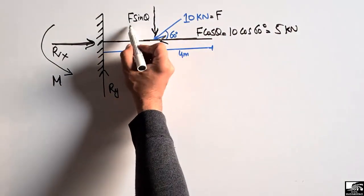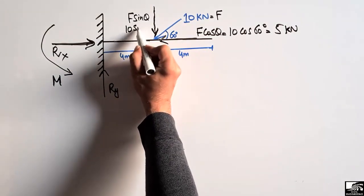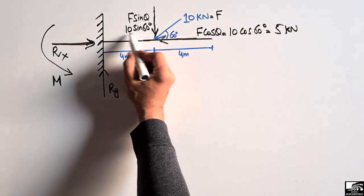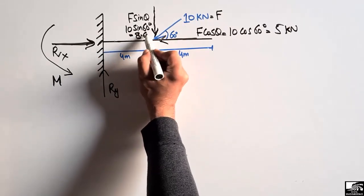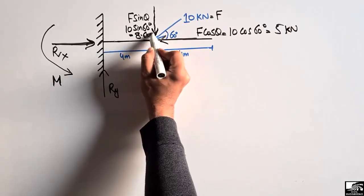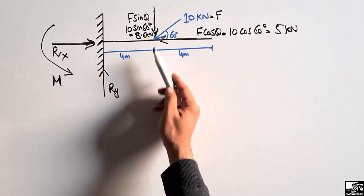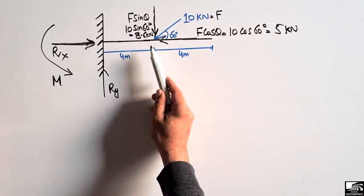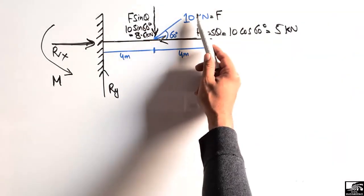The vertical component of this inclined load is F·sin(θ). With F = 10 kilonewtons and θ = 60 degrees, multiplying these gives 8.6 kilonewtons. So 8.6 kilonewtons is acting vertically on this beam.